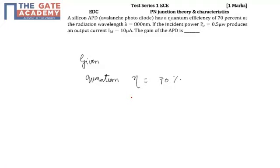The radiation wavelength lambda is 800 nanometers. Input power is 0.5 microwatts.